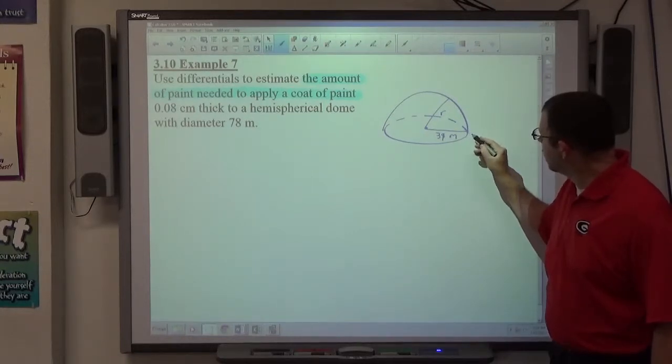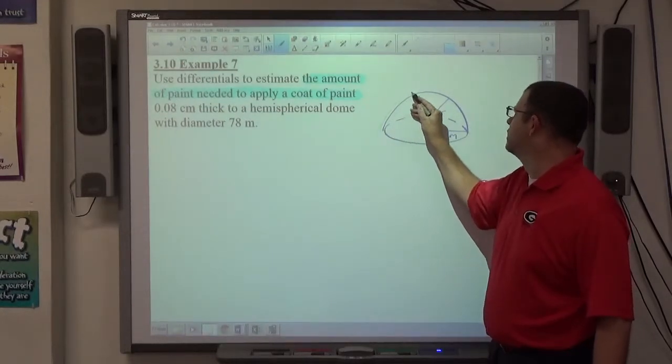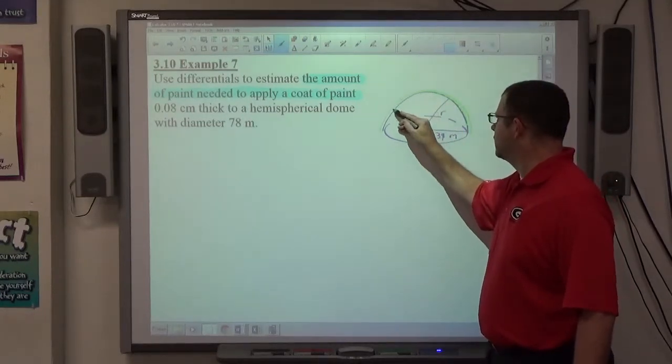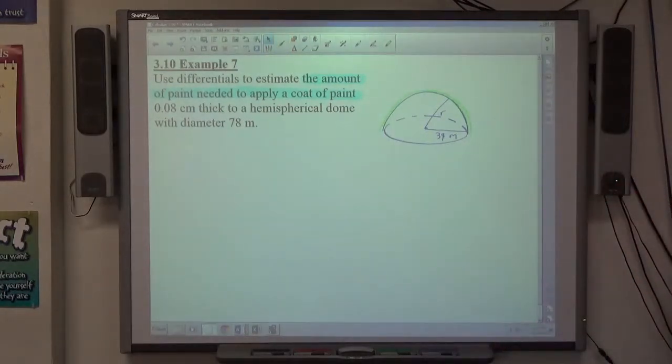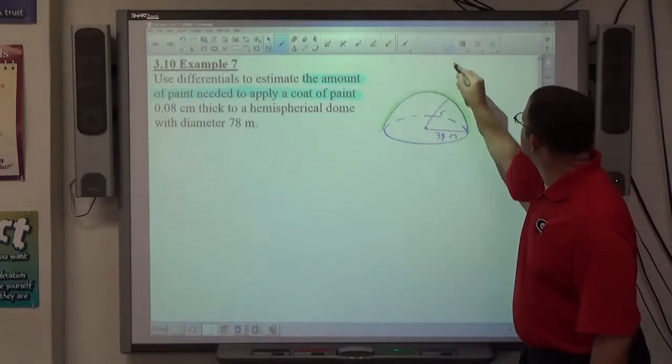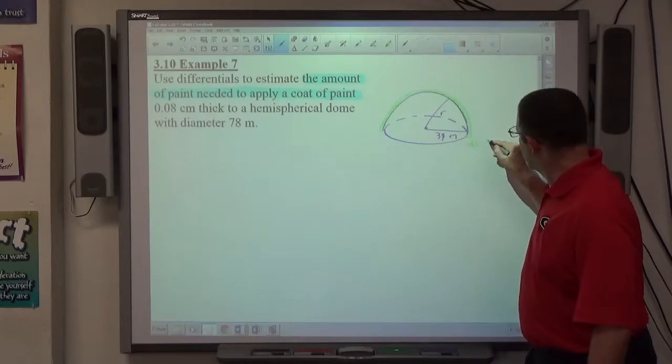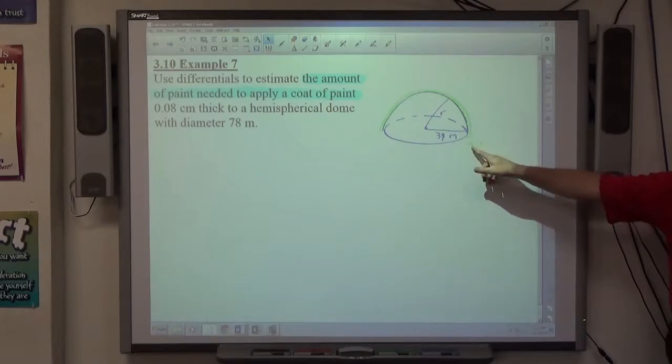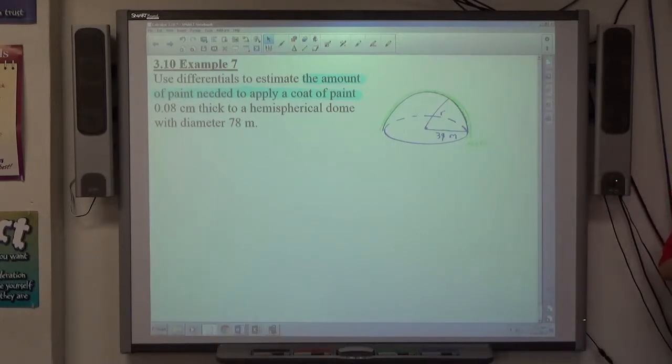So if you imagine this little thin layer of paint sitting on top of this tree dome, I'm going to draw it bigger than it really is, but imagine you got your paint and your paint is right there. There's our paint that's 0.08 centimeters thick. Anybody visualize that? So this little deal here is 0.08 centimeters thick. They want us to use differentials to find that, and what I'm going to tell you is this. The surface area of the dome itself using 39 meters as the radius is going to be some number, and the D surface area, the error of surface area based on this amount of air is going to represent the surface area of that green stuff.